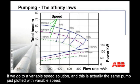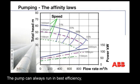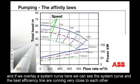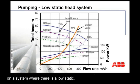If we go to a variable speed solution — this is actually the same pump, just plotted with variable speed — you can see that the efficiency curves have changed shape. The pump can always run at best efficiency. If we overlay a system curve, we can see the system curve and the best efficiency line running very close to each other on a system where there is a low static head.